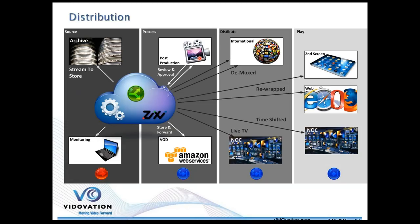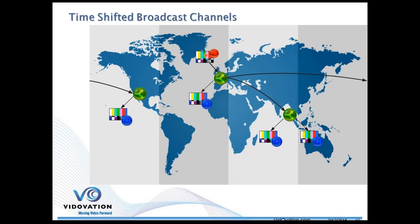You could have an archive source, with Zixi pushing and monitoring the archive. This suits a film or TV workflow requiring post-production — you can grab content in the field and push to different post-production studios to produce the video for retransmission.